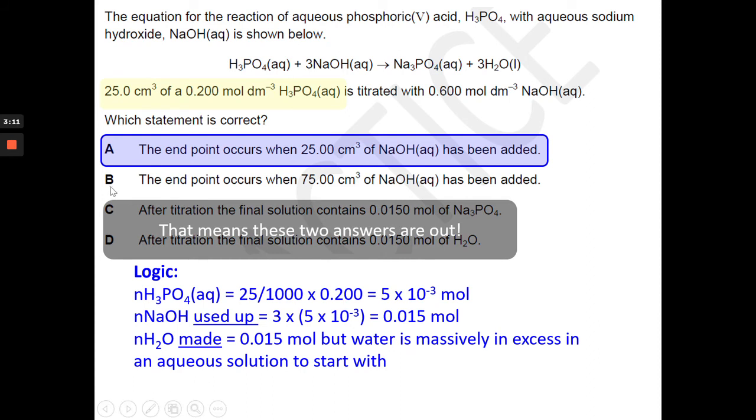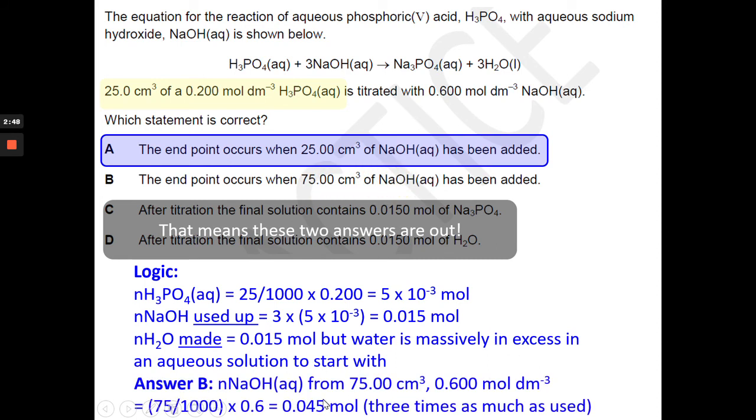Let's look at this one here. So the end point occurs when 75 centimeters cubed of NaOH has been added. So let's have a look. We've got 0.6 moles per decimeter cubed NaOH. We have in that answer possibly 75 centimeters cubed of NaOH. We can work out the number of moles that that represents. That represents 0.045 moles.